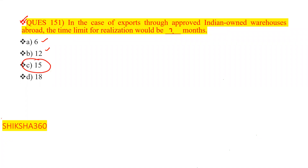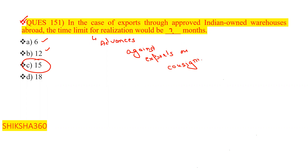This was discussed under advances against export on consignment basis. Please remember: in the case of exports through approved Indian-owned warehouses abroad, the time limit for realization is 15 months.